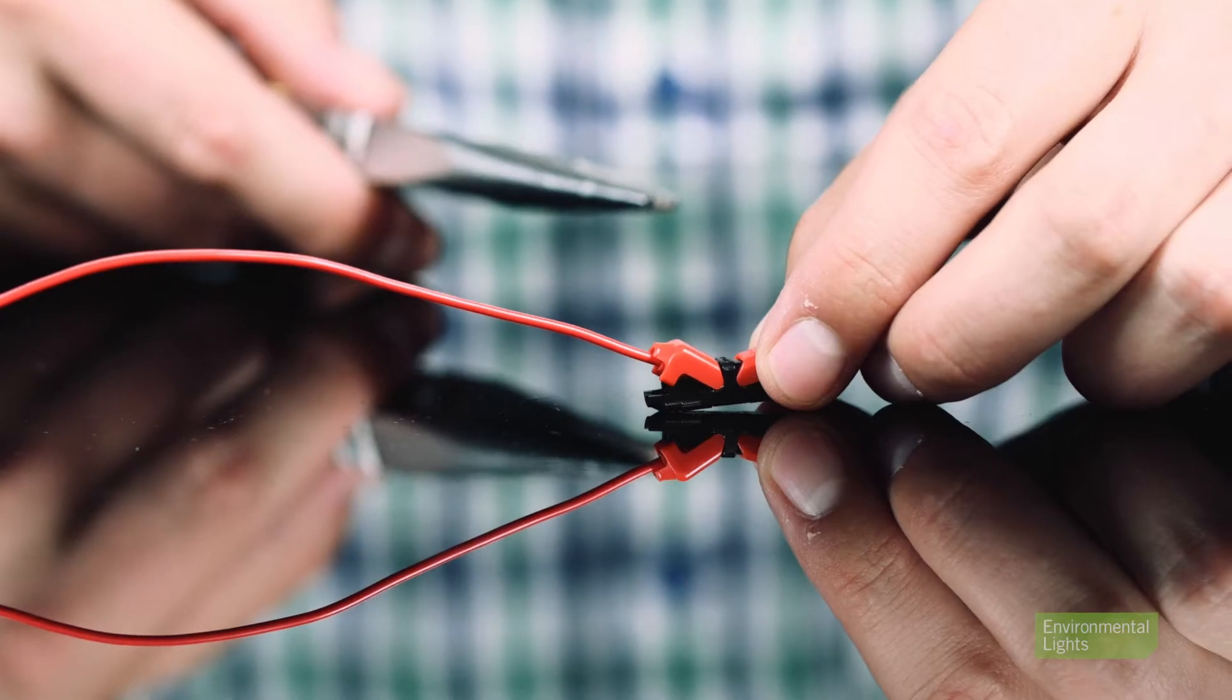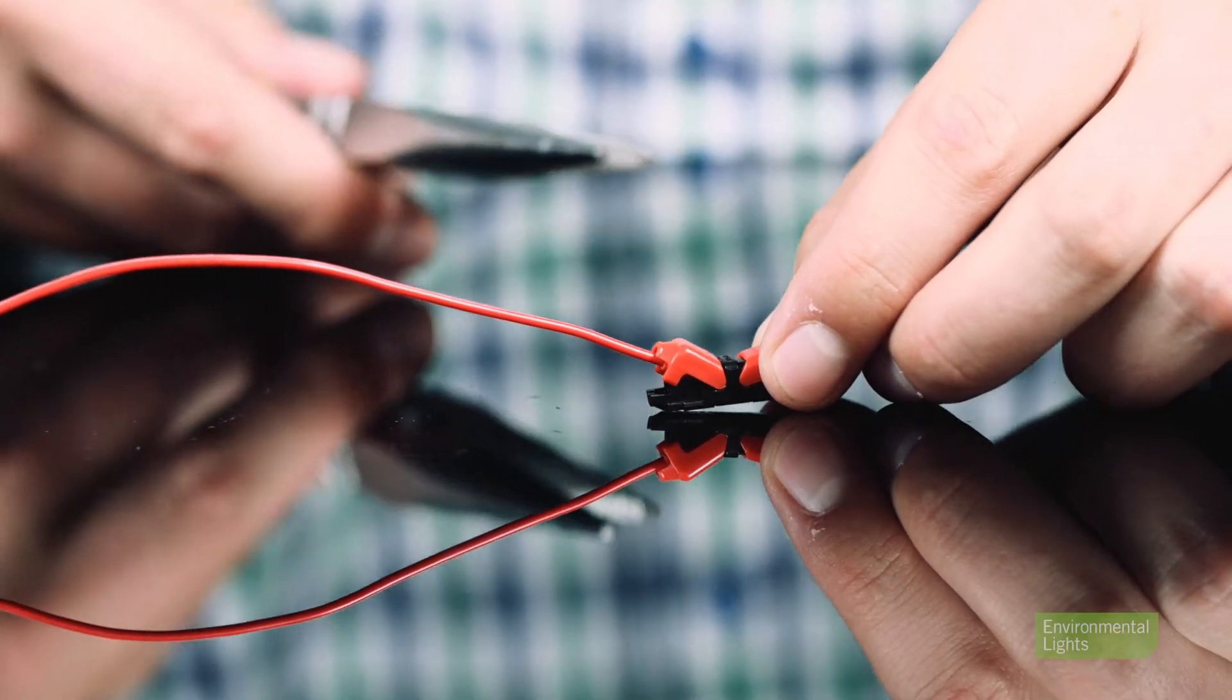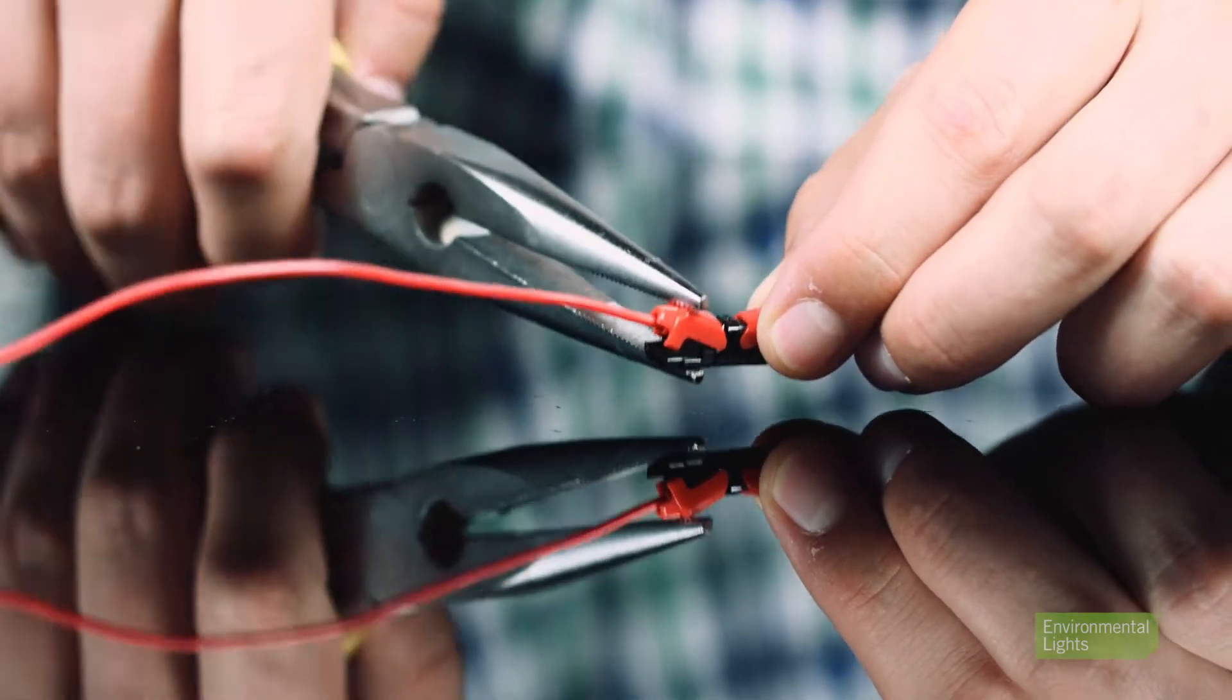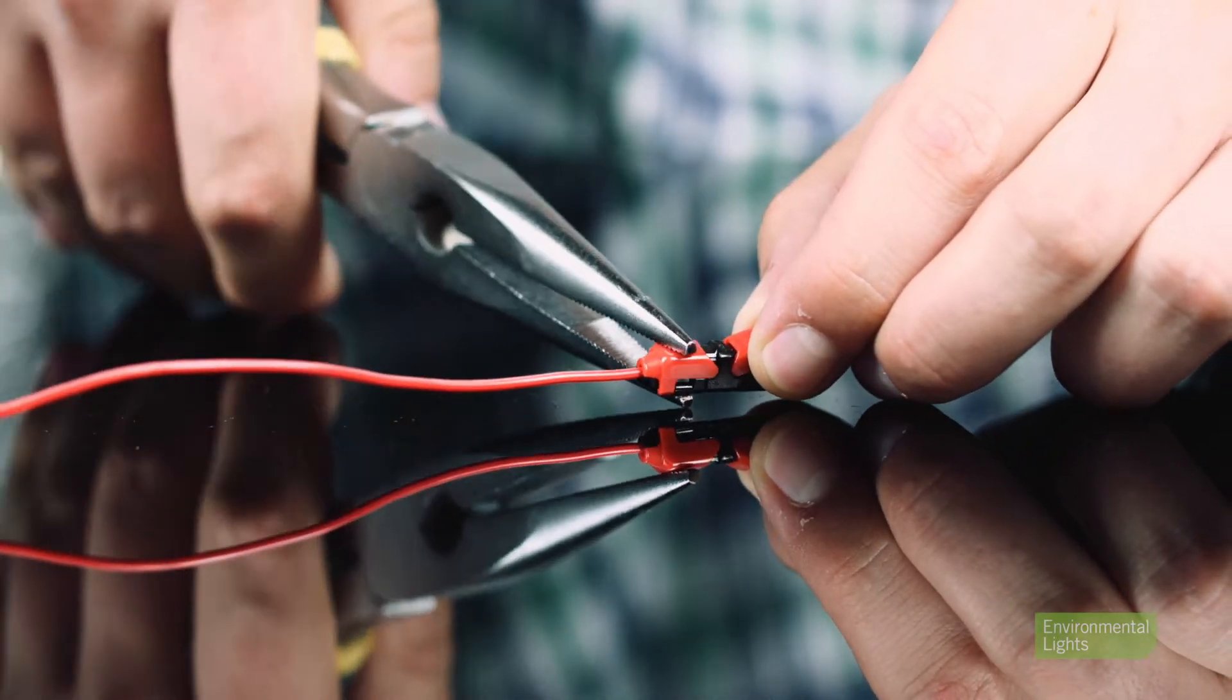The force of closing the connector will cause the v-shaped internal contacts to slice into a wire jacket, securing the wire and making contact with the wire strands.